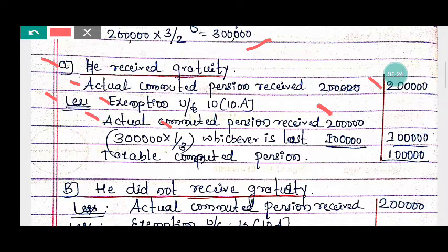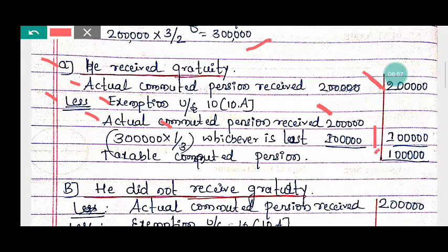So we compare: actual computed pension received is rupees two lakh, and one-third of computed full value of pension is rupees one lakh. Whichever is least will be the exempted amount. The least is rupees one lakh. Therefore, the exemption is rupees one lakh, and the taxable computed value of pension is also rupees one lakh.